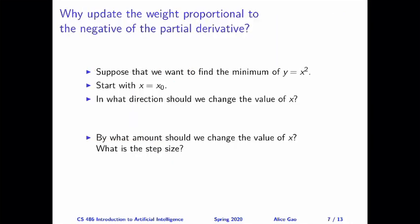So the main idea of this derivation is that I'm going to use a very simple function, the quadratic, the squared function. And I'll use this to derive some intuition about in which direction should we change the value of x when we're trying to minimize the function and also by what amount should we change the value of x. And using this intuition, I can re-derive the formula for gradient descent any time I want.